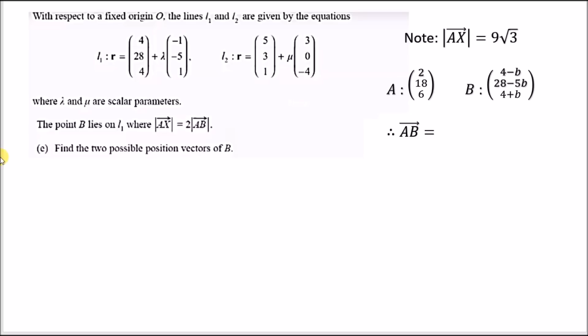For part e, it says that point B lies on L1, where the absolute value of AX equals 2 times the absolute value of AB. These are the magnitudes. We need to find the two possible position vectors of B. From previous problems, the absolute value AX was 9 root 3. The position vector A is 2, 18, and 6. Since B lies on L1, if we let lambda equal beta, we can find it. This is an expression for position vector B.